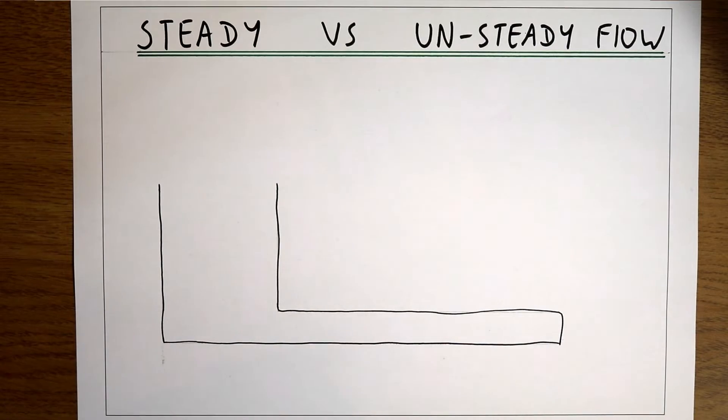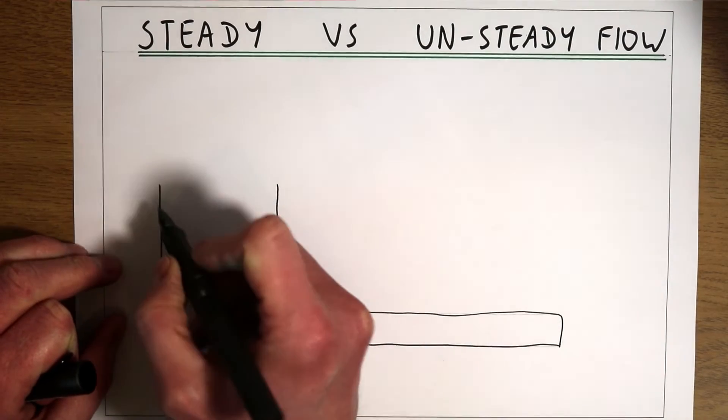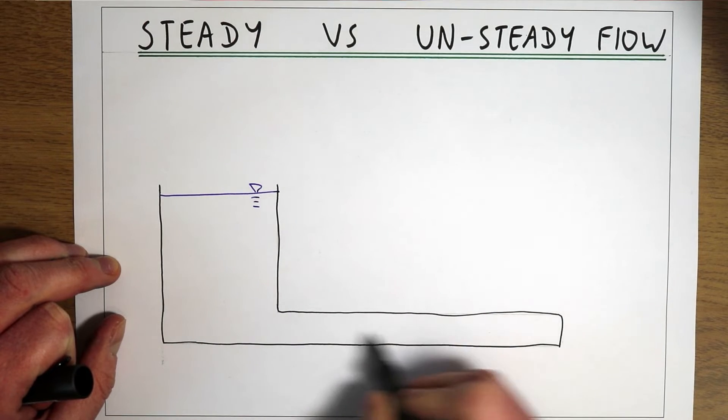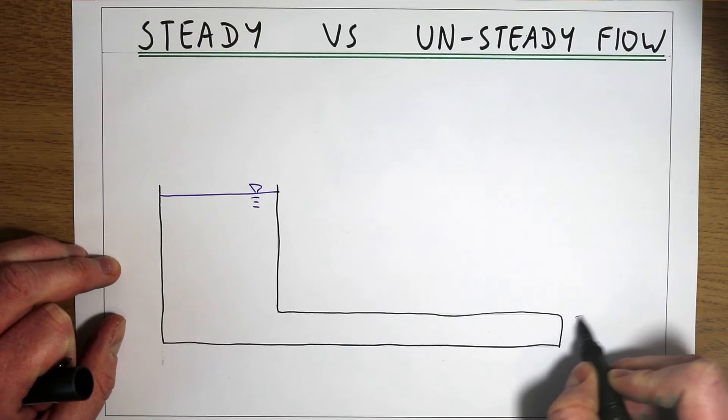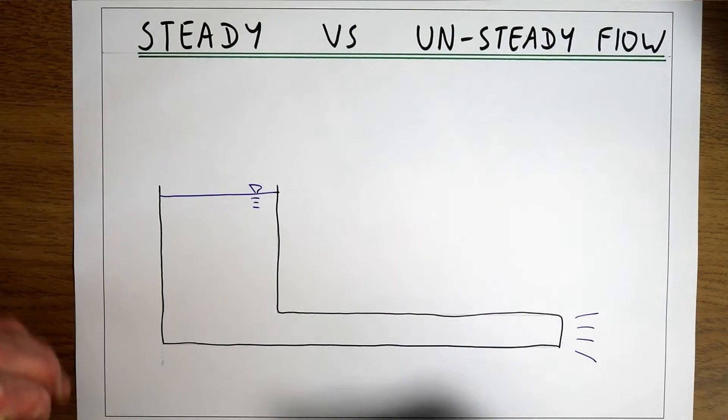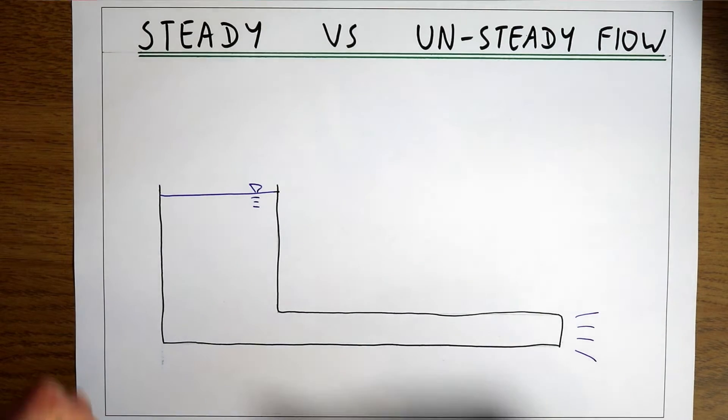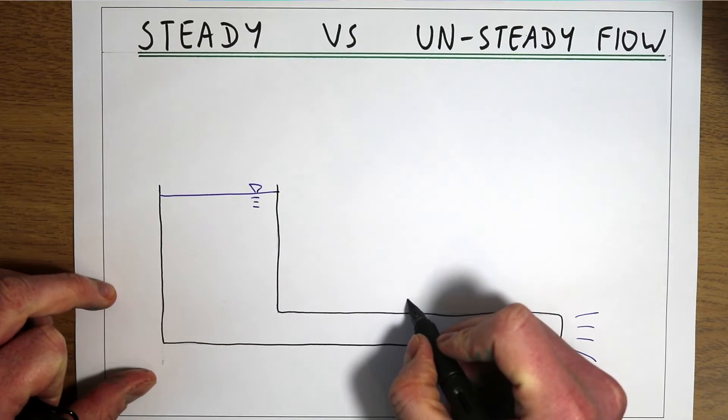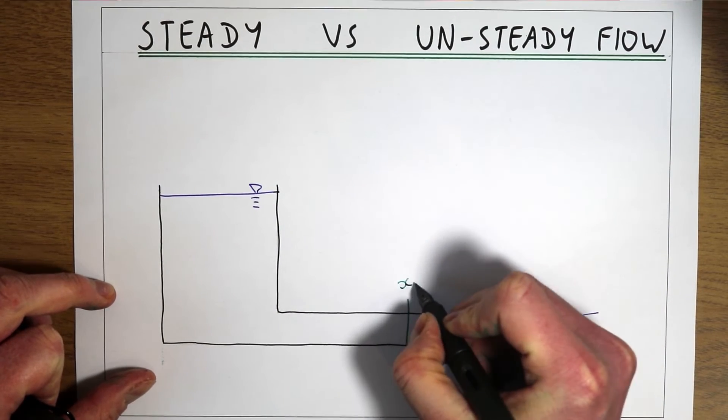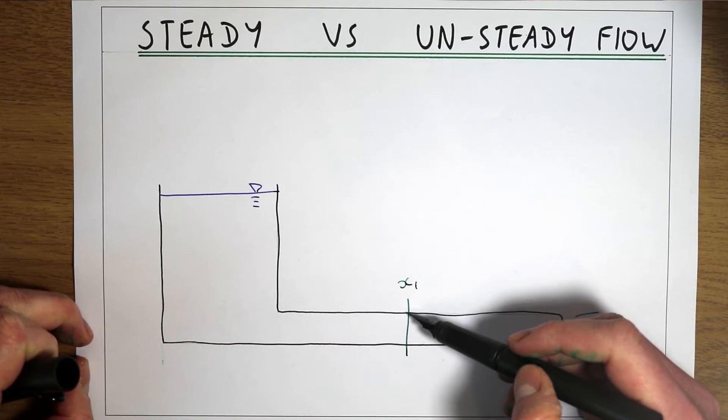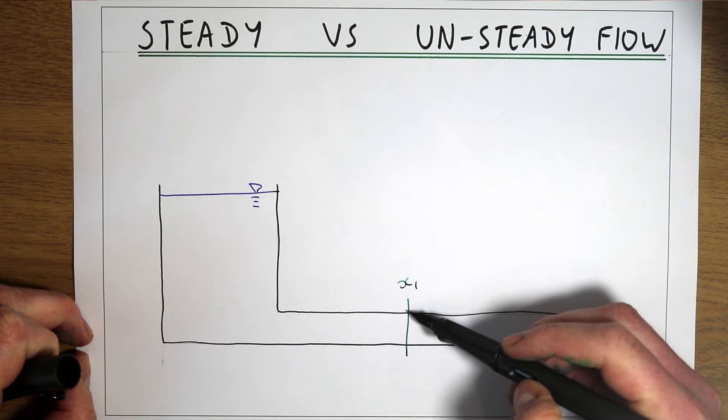We can think of an example. If we've got a tank of water, we've got a pipe coming out the bottom of that tank, so we've got a flow of water going through that pipe. We can think about what's happening at a particular instance in space, a location x1, what is happening to the essential flow parameters at that location.